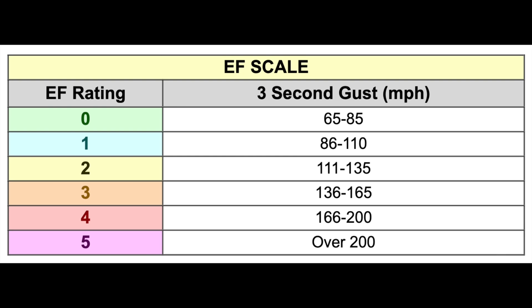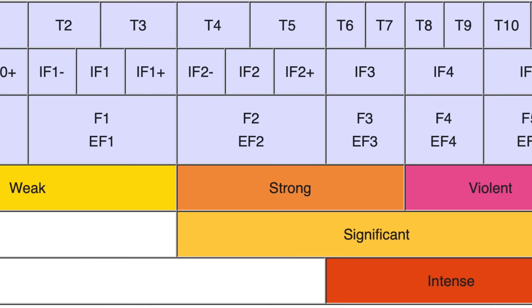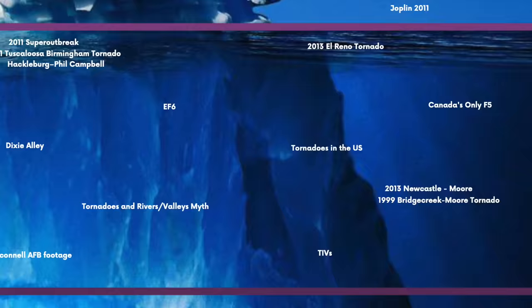EF6 — the Enhanced Fujita Scale only goes up to EF5, but some claim an EF6 monster tornado is possible. Officially, an EF6 is just a myth and impossible, although they do mention them a lot in movies.